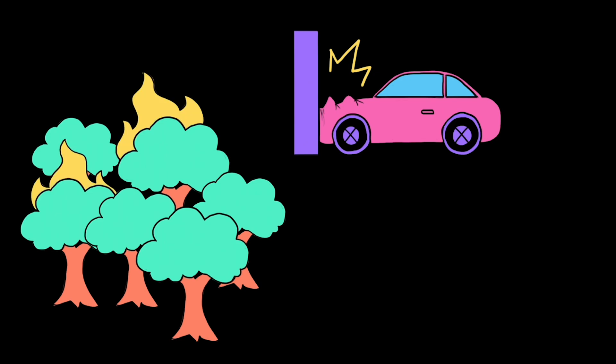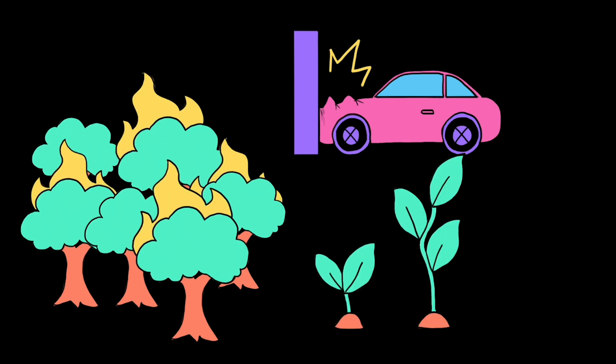For example, maybe I want to simulate a car crash to predict the risk of injury to the passengers. Or I want to simulate a forest fire to predict how far it'll spread. Or I want to simulate crop growth so I can predict yields and decide what to plant. These are all things that would be far too costly, too devastating, or take far too long to repeat in the real world.